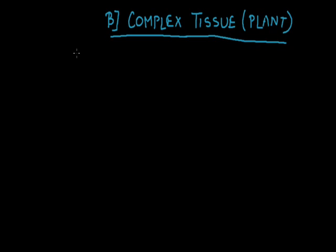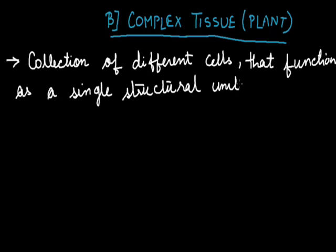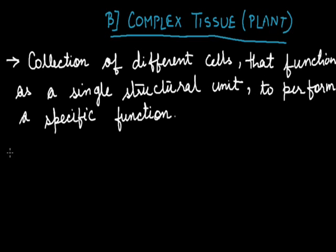Now in case of simple tissues they are composed of single type of cells whereas the complex plant tissues can be defined as the collection of different cells that function as a single structural unit to perform a specific function. And the examples include the xylem and phloem tissues. These tissues are present in the vascular plants.